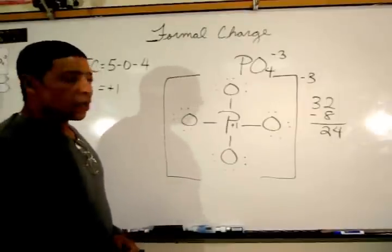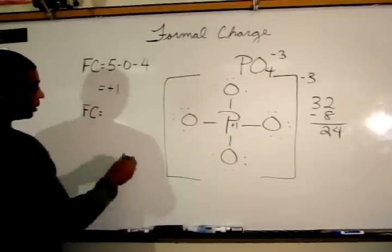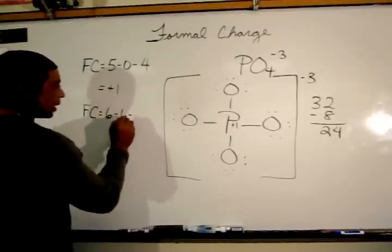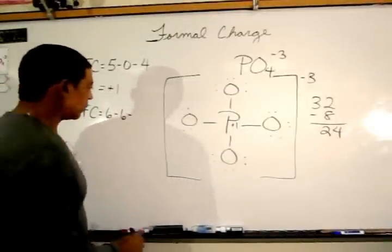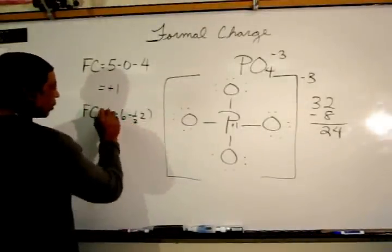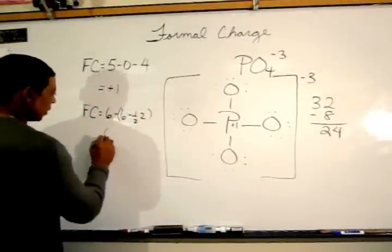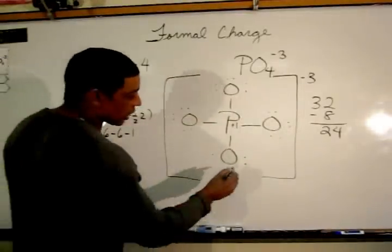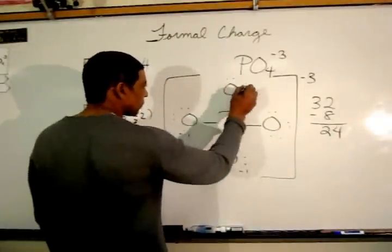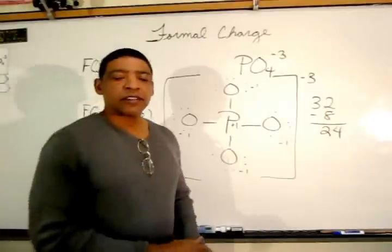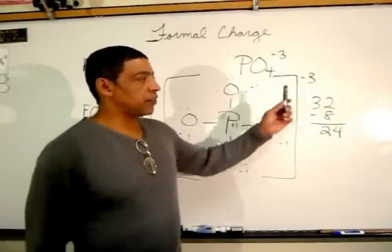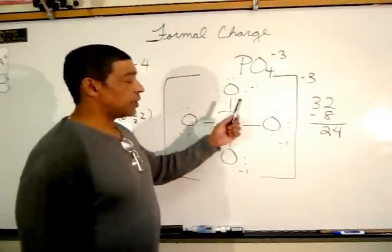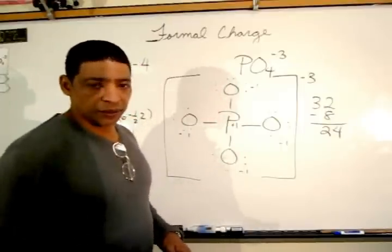Each oxygen will have the following formal charge. The formal charge for oxygen will be six minus six minus one-half the total number of bonding electrons, which is one-half of two. So the formal charge for each oxygen will be six minus six minus one, which is equal to negative one. So each oxygen will have a formal charge of minus one. The sum of the formal charges should equal the overall charge of the phosphate ion, and indeed negative one times four plus one equals negative three.